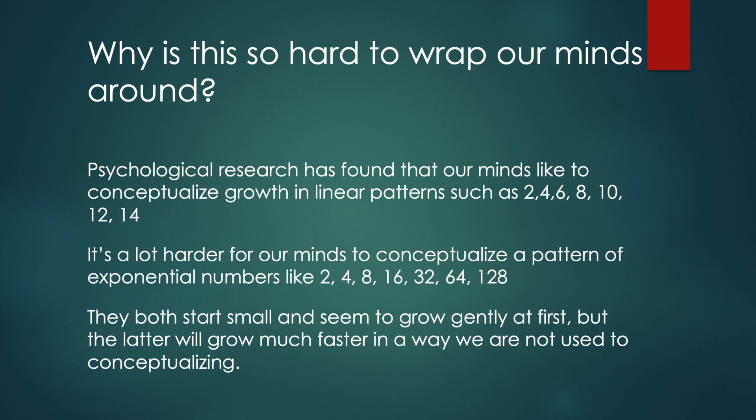Psychological research has found that our minds like to conceptualize growth in linear patterns, such as 2, 4, 6, 8, 10, 12, 14, and so on. It's a lot harder for our minds to conceptualize a pattern of exponential numbers, like 2, 4, 8, 16, 32, 64, 128. Both of these series of numbers start small and seem to grow gently at first, but the latter will grow much faster, and in a way we are not used to conceptualizing.